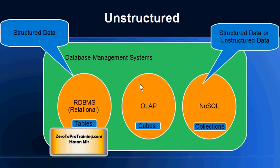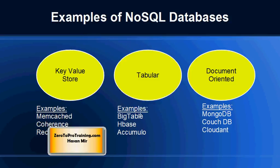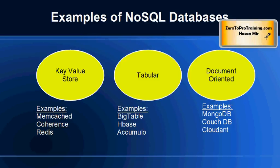Examples of unstructured data would be media, audio files, video files, log files, blogs that people are writing, text messages, and so on. NoSQL is a category which can further be divided into three categories: key-value store databases, tabular databases, and document-oriented databases.